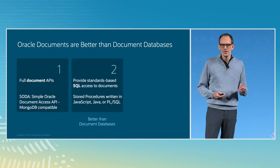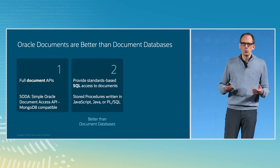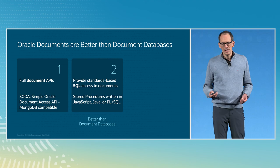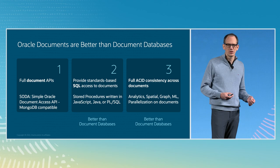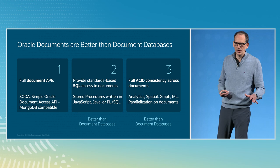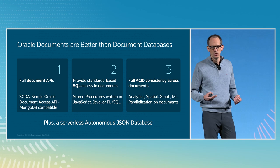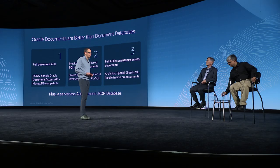Oracle database is the best document database available today. We provide the same easy-to-use APIs — there is SODA, which stands for Simple Oracle Document Access, supporting REST and many drivers like Python and JavaScript. It's also MongoDB compatible, so you can take a MongoDB application and connect it to Oracle and run Mongo workloads there. Beyond these NoSQL document APIs, we also give you full standard SQL-based access to the data, which is very important for reports or analytics over JSON documents.